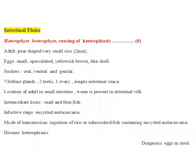There is no separation into male and female. Now about the location of the adult worm, it is found in the small intestine, specifically within the intestinal villi. About its intermediate hosts, there are two: the first intermediate host is the snail, and the second intermediate host is fish.